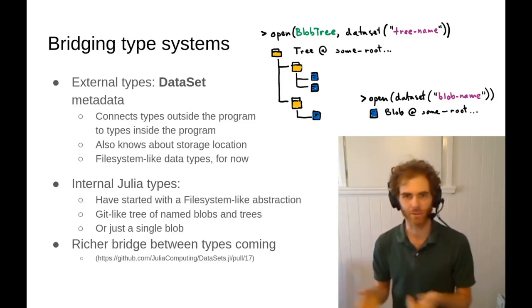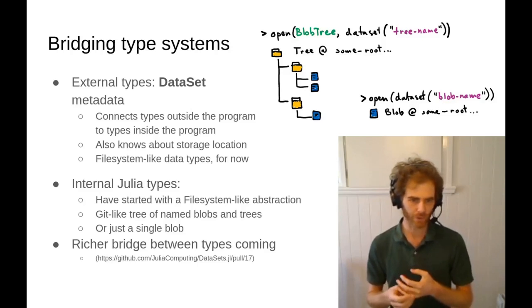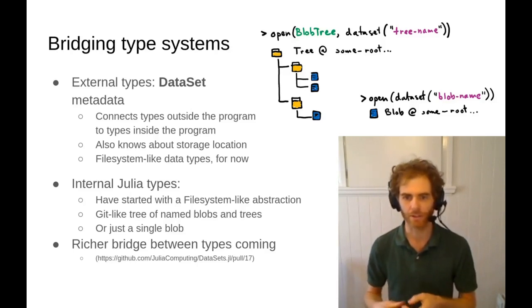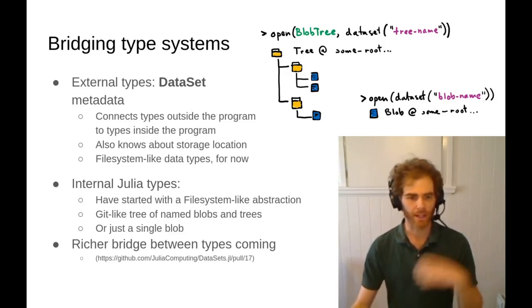You might do some kind of auto detection of what that is, or maybe you just assume it's a certain type. So the Dataset type provides a place to hang metadata about the data outside your program.